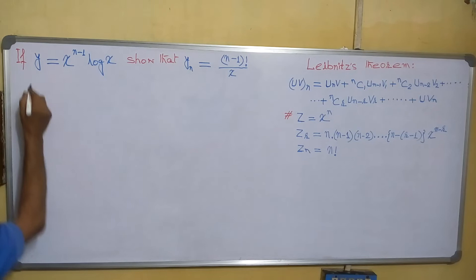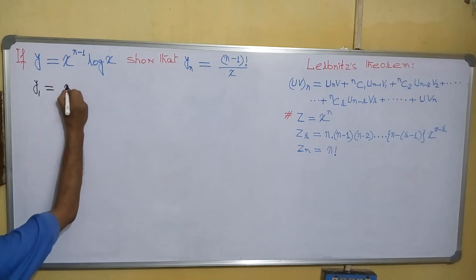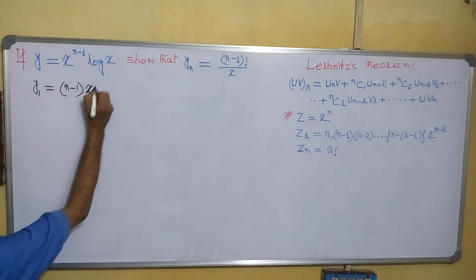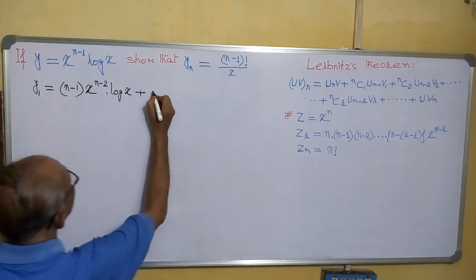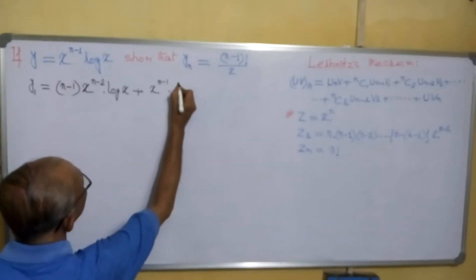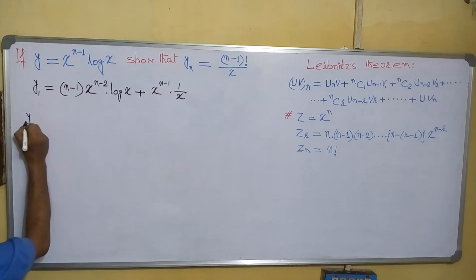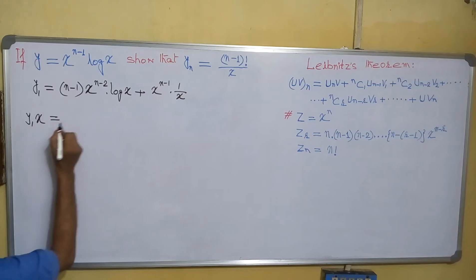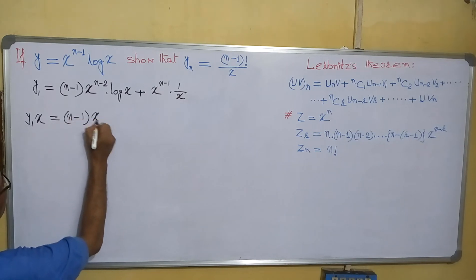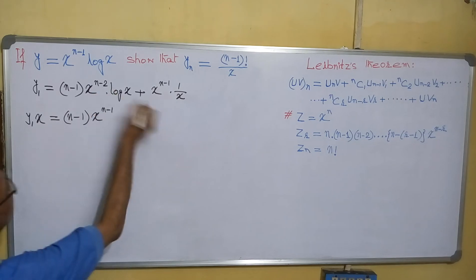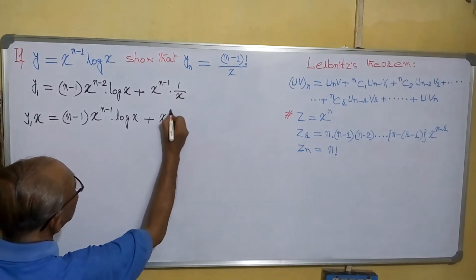First, what we can do is differentiate just one value. So y₁ equals — the derivative of this will be n minus 1 into x to the power n minus 2 into log x, plus x to the power n minus 1 into derivative of log x, which is 1 by x. Now if we multiply by x, we get y₁·x equals n minus 1 into x to the power n minus 1 into log x, plus x to the power n minus 1.